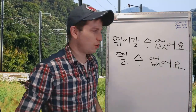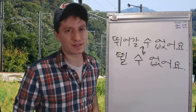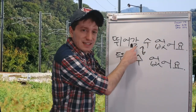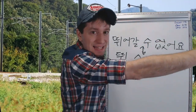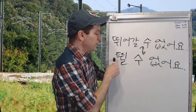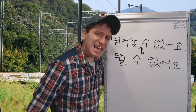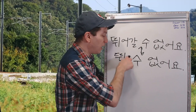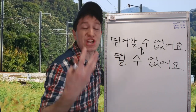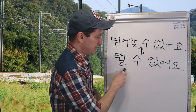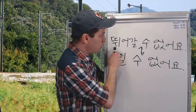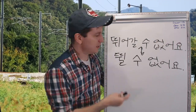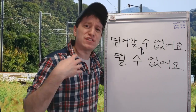뛰어갈 수 없어요. Both of these are correct but their meanings are slightly different. 뛰어갈 수 없어요 means 'I can't run there.' However, if your leg hurts and you say 'I can't run,' you're emphasizing that you cannot run — just the action of running in general, not to anywhere. You're saying 'I can't physically run.' You could say both 뛰어갈 수 없어요, meaning 'I cannot run there,' or just 뛰어갈 수 없어요 meaning 'I cannot run in general.' Just know that they have different meanings.